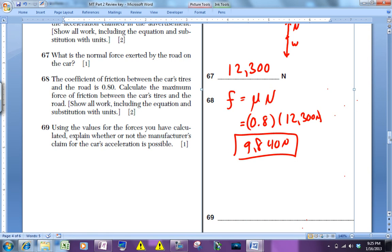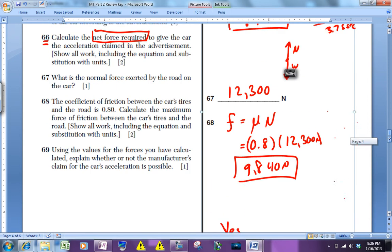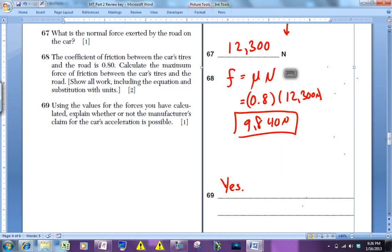And then for 69, this qualitative question, use these values to explain whether or not that's possible, whether the claim that you can do a zero to 60 in 3.75 seconds is plausible. And the answer is yes, it is. And the reason we can say that is that the force required to get the car to accelerate that quickly is about 9,000 Newtons, 8,938.